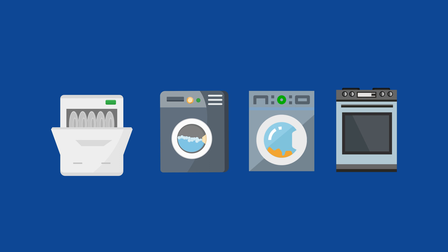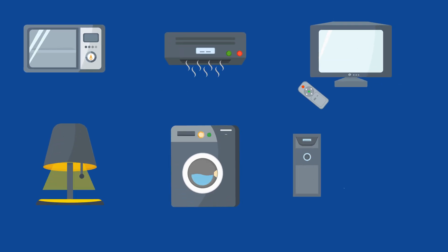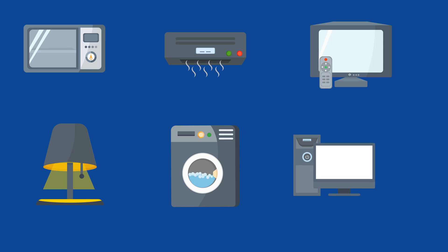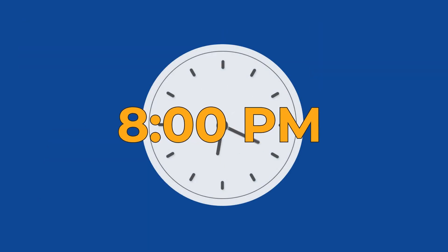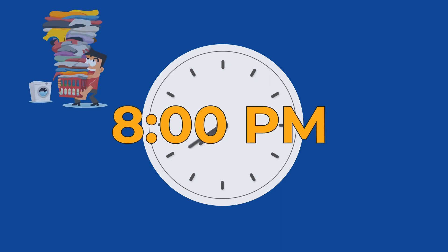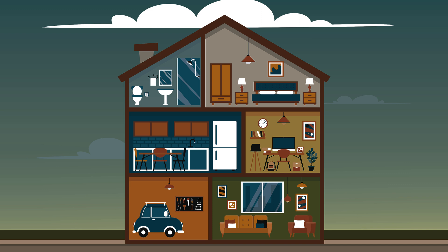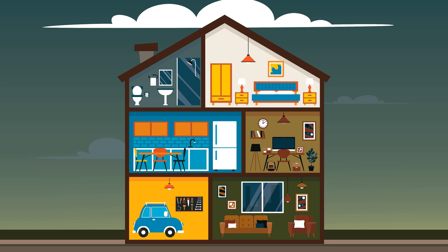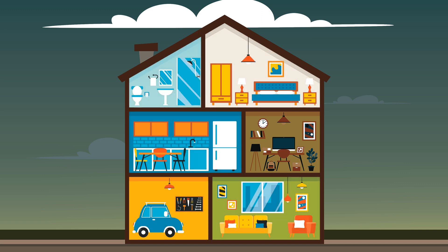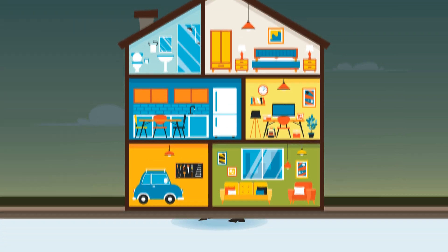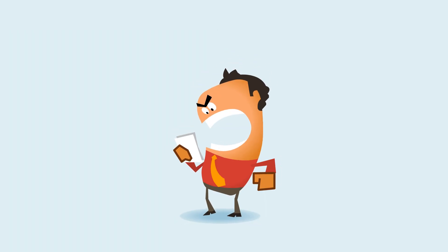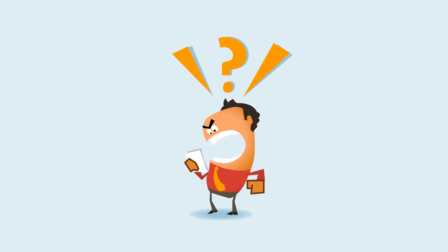The thing about demand charges is, it's easy to forget and turn on a bunch of appliances when you get home from work. 8 pm is a long time to wait to start laundry, cook dinner, and give the kids a bath before bedtime. In most homes, family members will all be starting appliances simultaneously, without even knowing it. And that can result in a huge surprise bill.